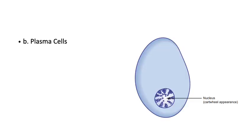Plasma cells function to manufacture antibodies against antigens, thereby imparting resistance to the body against disease. The cells are ovoid in shape with an eccentric nucleus — that is, positioned to one side. The chromatin in the nucleus is arranged in a radial pattern, giving it a cart wheel appearance, which can be asked in MCQs.